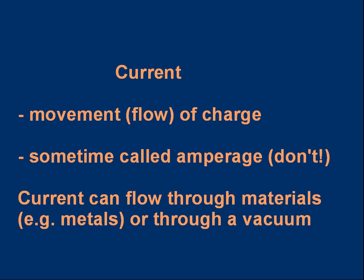Let's move on to current. Current, in simple terms, electrical current, is the movement or flow of charge. Some people call current amperage because, as we'll see, it's measured in amps. But please do not call current amperage. This is a term used by non-physicists. If you are a physicist, you will not use the word amperage. You will use the word current. And you need to know that current can flow through materials. Usually it's metals, copper wire, for example. But a current can flow through a vacuum. You can have a beam of electrons flowing through a vacuum. That's a current as well. It's simply a movement of charge.